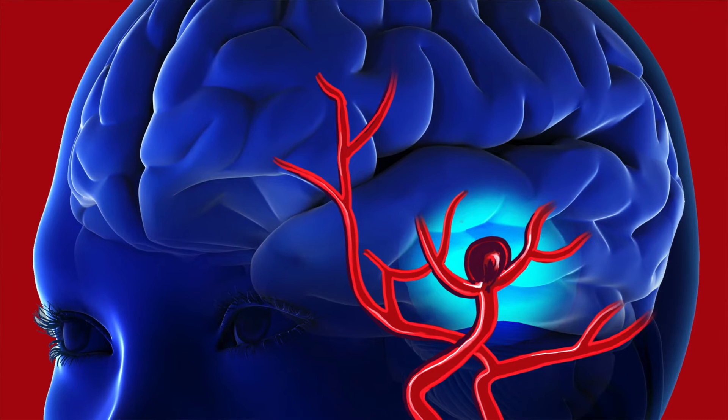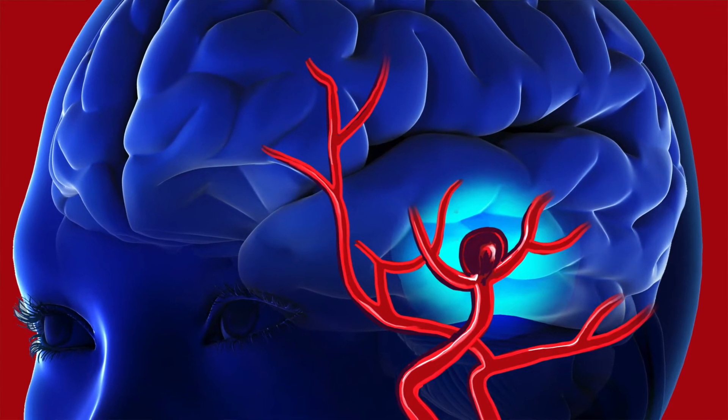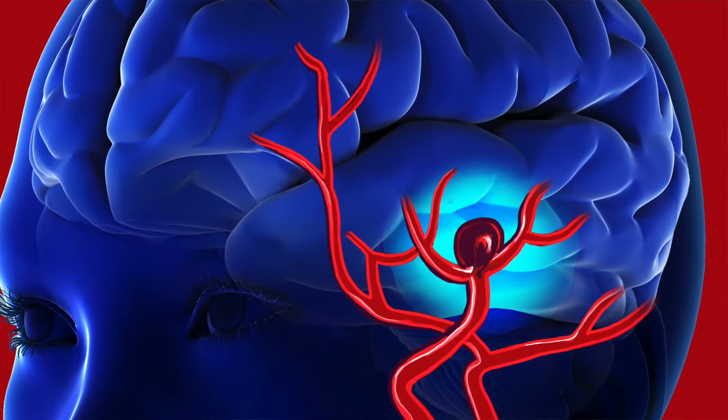A cerebral aneurysm is a thin or weak spot in an artery in the brain. It can bulge out and actually look like a berry on a stem. If it progresses and gets bigger and weaker, it can rupture, causing bleeding in the brain.